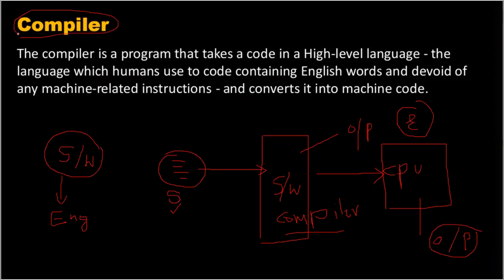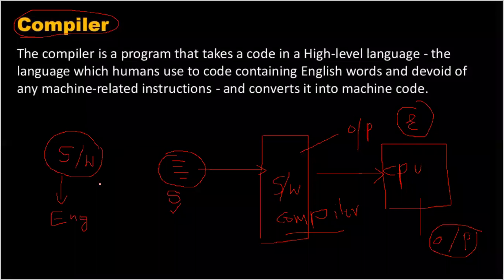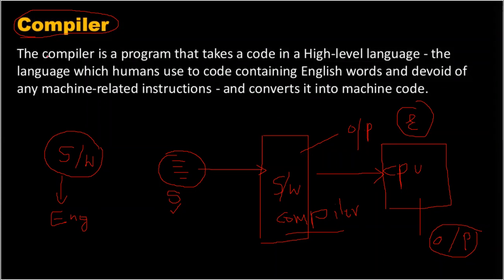Compilers are very important — whenever you want to convert code, you need a compiler. The process is: give source code to the compiler, it generates object code, then from object code you get an executable file, which is given to the CPU, and finally you get the output.